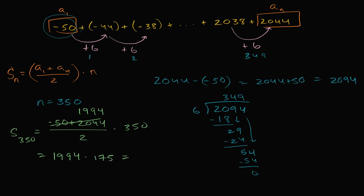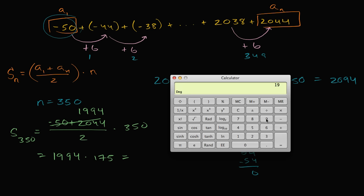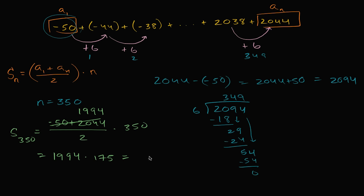Which is equal to, and I'll use a calculator for this one. So let me get the calculator out. So I have 1994 times 175 gives us 348,950.